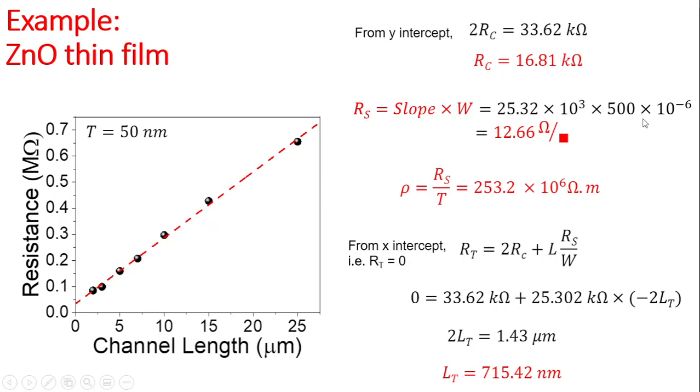We know from the previous slide that Rs = slope × width. In this case, the width is 500 microns, so from this you can get that the Rs or sheet resistance is 12.66 Ω per square. Using this value, you can obtain the resistivity, which is 253.2 × 10^-6 Ω·m.